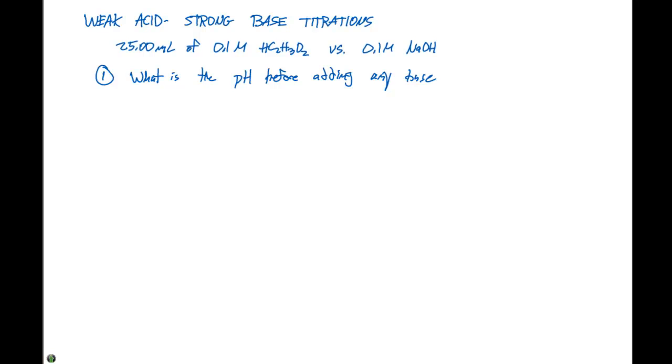Now that we've looked at a strong acid strong base titration, let's look at a weak acid strong base titration. Here we have 25.00 milliliters of a 0.1 molar acetic acid solution, which is a weak acid, versus 0.1 molar sodium hydroxide.